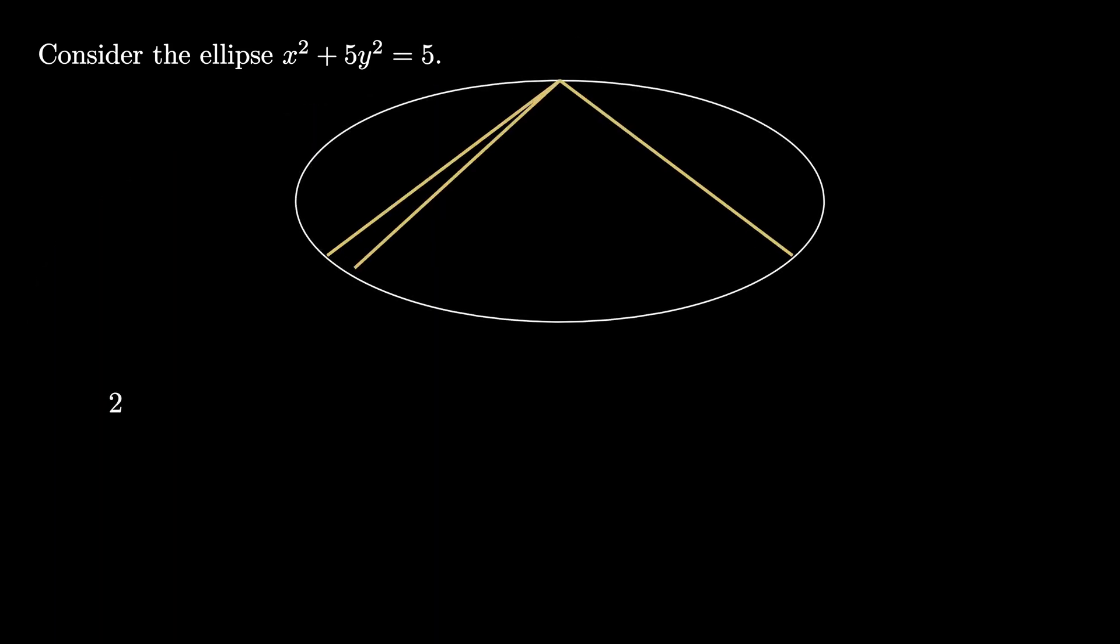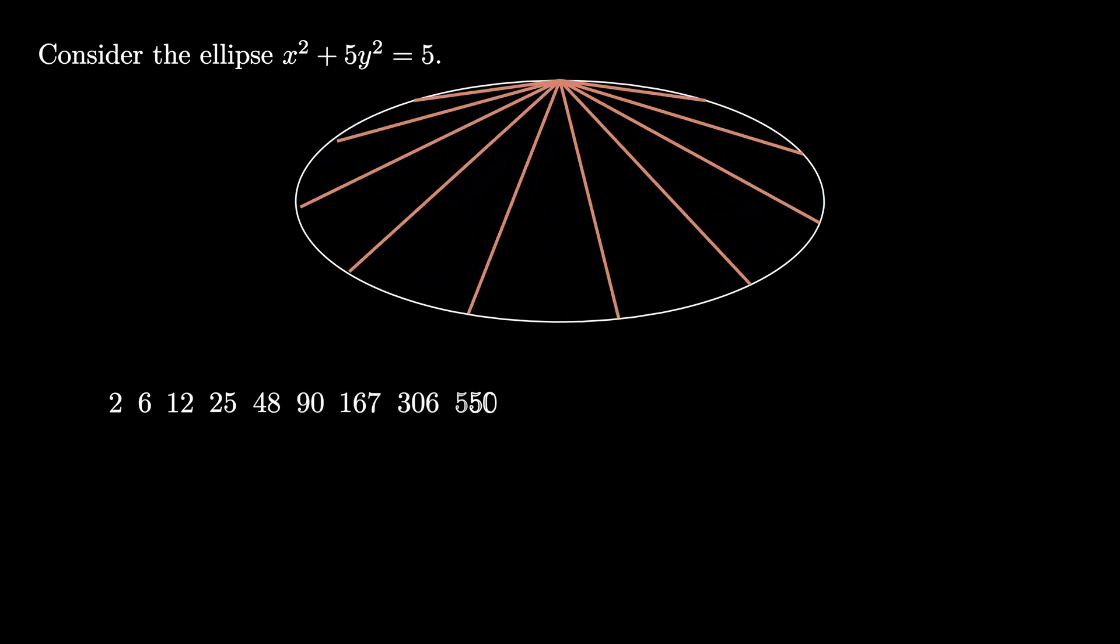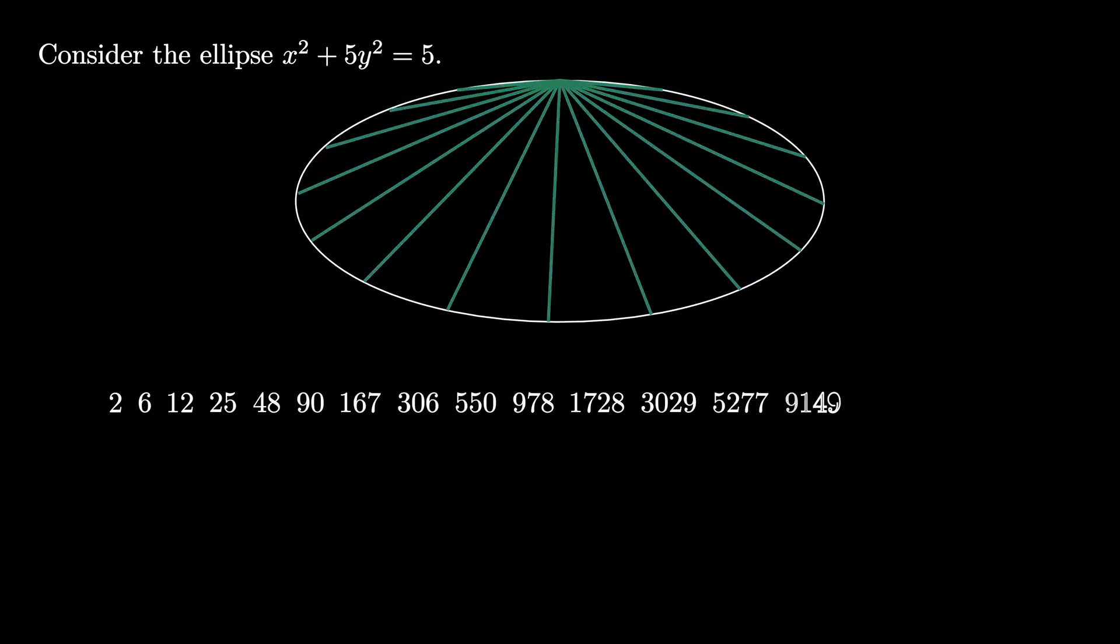The first few values of this sequence are 2, 6, 12, 25, 48, 90, and so on as pictured here. Can you find a closed formula for these products?